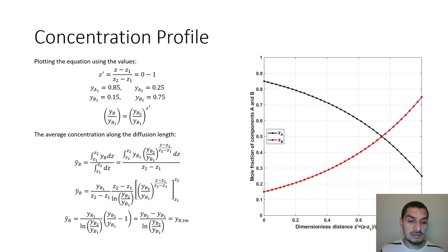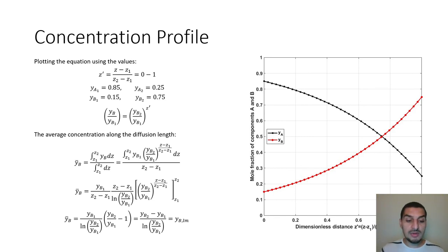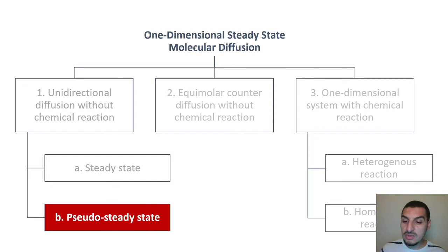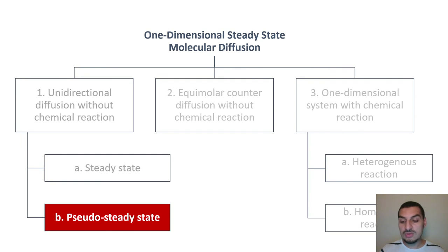This completes the first type of molecular diffusion: steady state, one-dimensional, unidirectional molecular diffusion. Next time we will talk about the pseudo steady state and understand what is different between steady state and pseudo steady state. See you then. Goodbye.